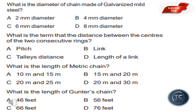What is the diameter of chain made of galvanized mild steel? The options are 2mm, 4mm, 6mm, and 8mm diameter. The answer is option B: 4mm diameter. What is the term for the distance between the centers of two consecutive rings?